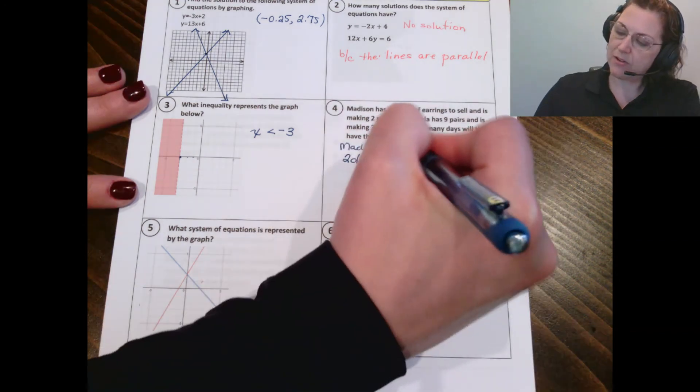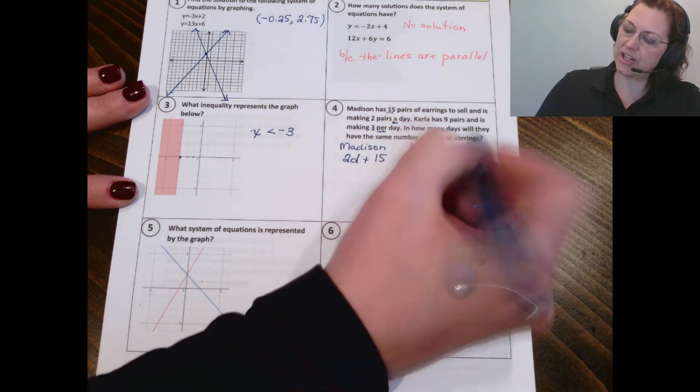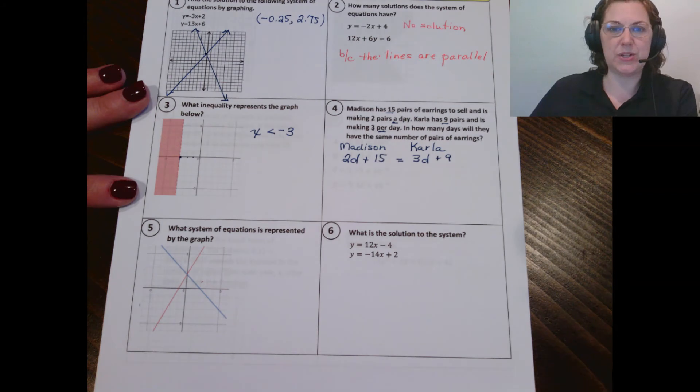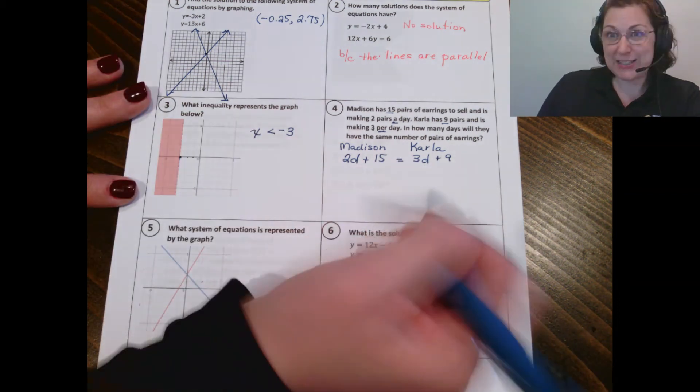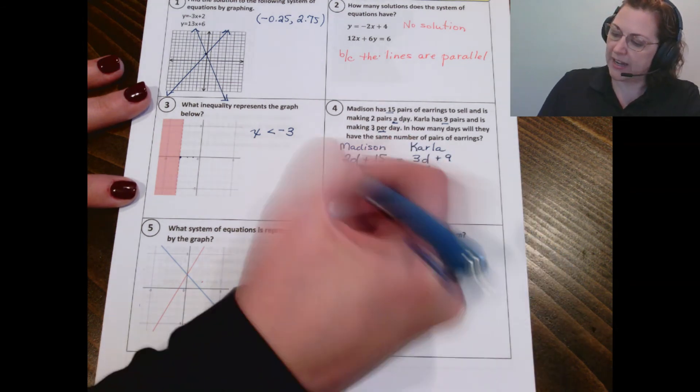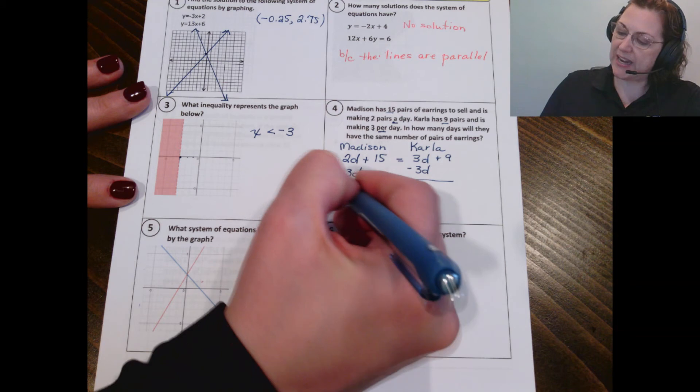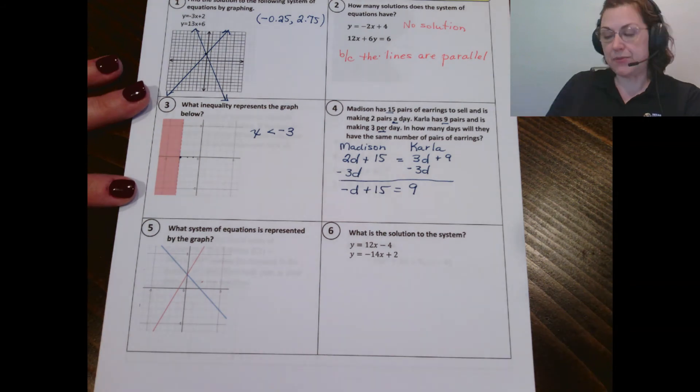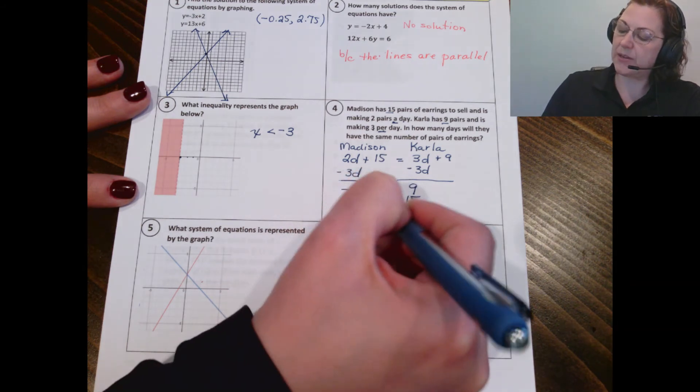Let's do Carla then. Remember that per day tells you to multiply. So three per day times D, and she already had nine to begin with. We want to know when these two are equal to each other. So you notice how I put the equal between them. I just want to solve. The first thing we do is to get all of the D's on one side. I like my D's to go to the left. So I'm going to subtract 3D from both sides. That'll give me 2D minus 3D gives me negative D plus 15 equals nine. Now I'm going to move the 15 by doing the opposite of adding 15. That's to subtract 15. And that gives me negative D equals negative six.